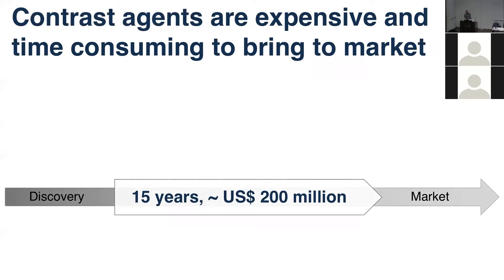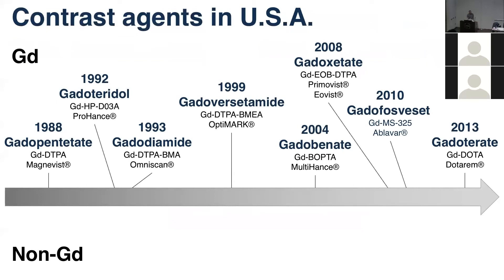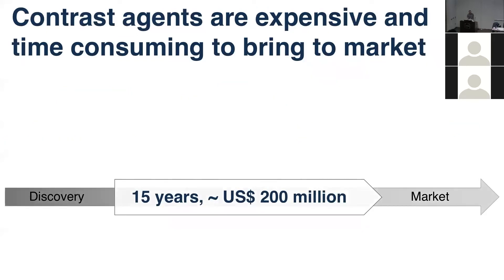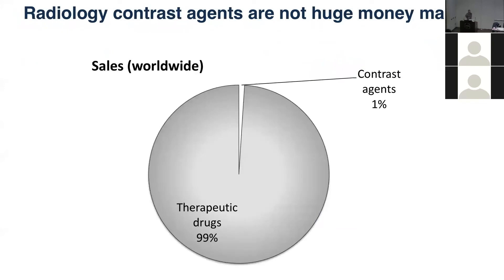From the time a contrast agent is first discovered until it reaches market takes about 15 years and 200 million US dollars. Worldwide, therapeutic drugs account for over 99% of all drug sales; contrast agents are fewer than 1%. Think about it: a person on blood pressure medication needs it every day of their life, but a patient might need a dose of gadolinium at most once every three months. Drug companies don't develop many contrast agents because it's very expensive to make them and you don't make much money from them.